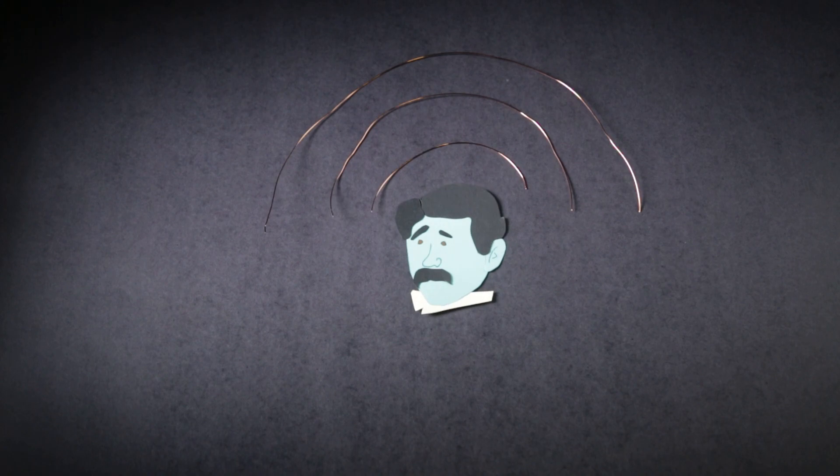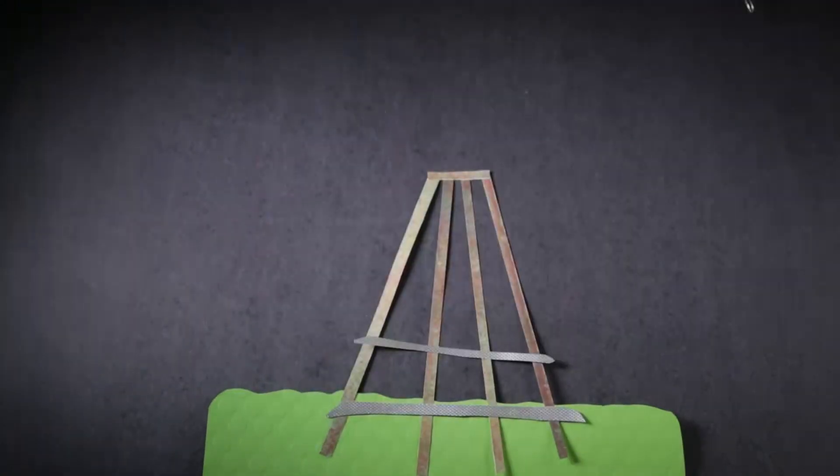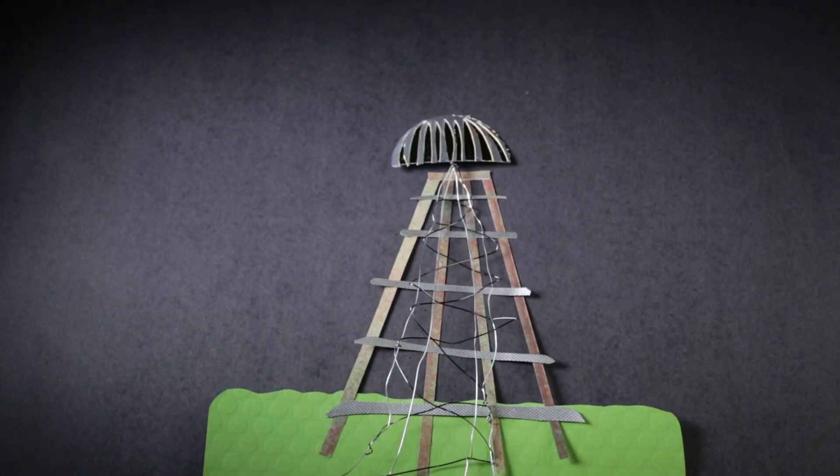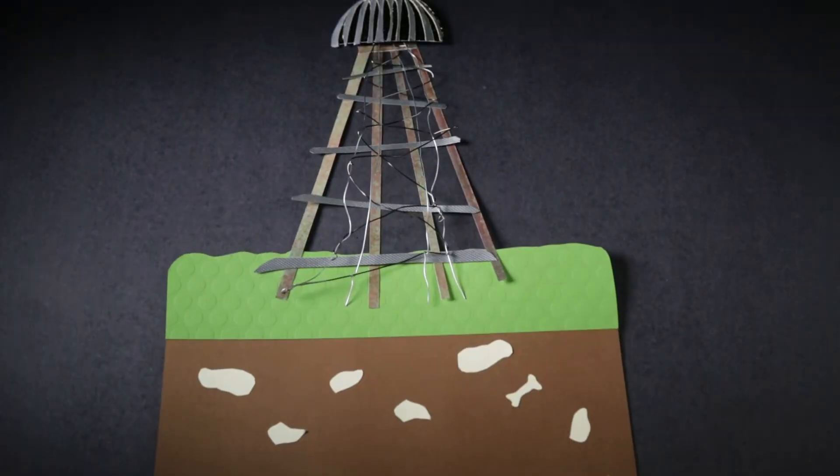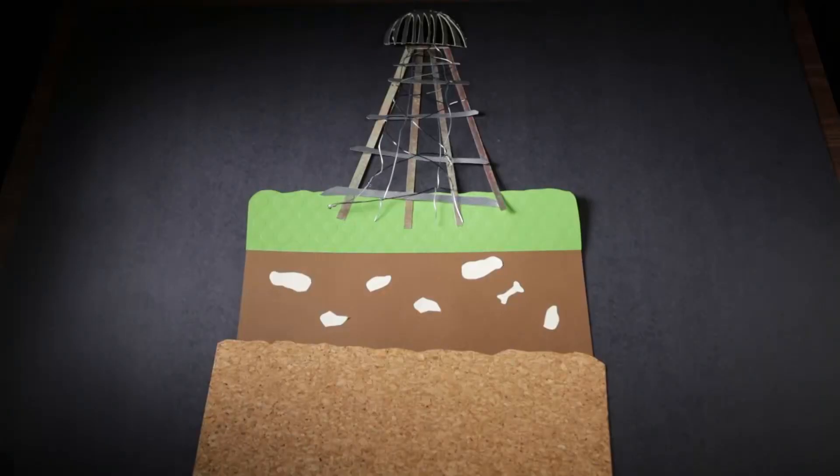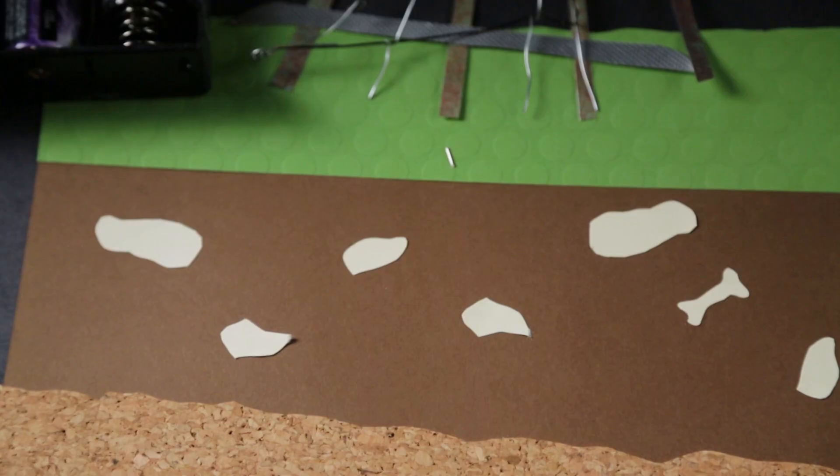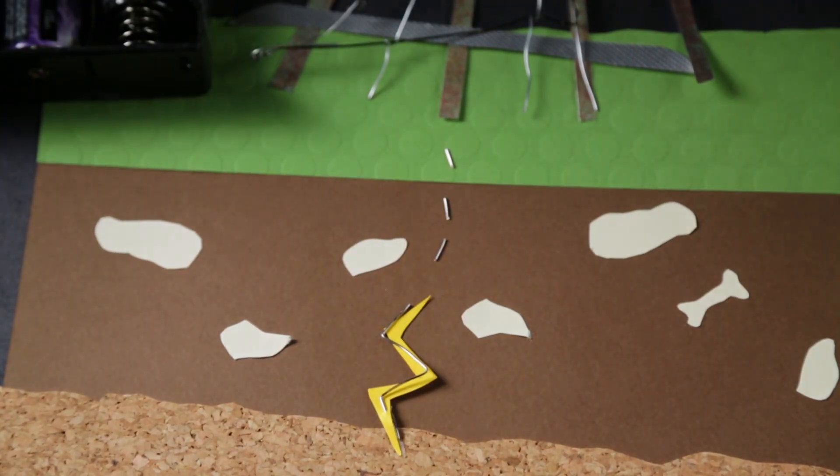But to really test this theory, Tesla needed to think bigger. So he started building Wardenclyffe Tower on Long Island in 1901. The 17-story tower would have sent electricity from a coal-powered generator deep into the ground via 300 feet of metal rods,